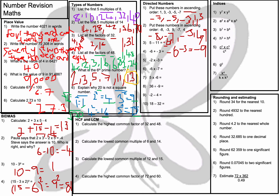Question number 5: minus 2 times minus 3. A negative times a negative gives a positive, so 2 times 3 is positive 6. Question number 6: −6 times −7 is positive 42. 5 times −6 — a positive times a negative is a negative — so −30. 36 divided by −9 is −4. −2 minus 4 is −6. And 18 minus 32 equals −14.